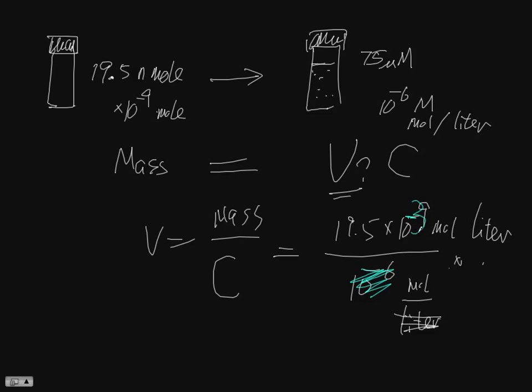So, 10 to minus 3 times liter, that becomes, one liter is 1,000. This will be a milliliter. So, there I have a molar molar canceled out. So, it seems like I have 19.5 in milliliter. Is that the answer?